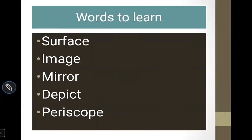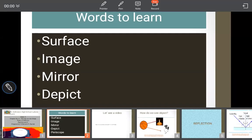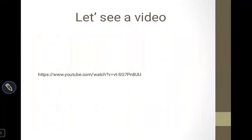The words you have to learn are: surface, image, mirror, depict, and periscope. We will focus on these. How is the mirror? What is the image? What is the mirror? What is the light? What does light reflect and what do you see in the mirror? Then we will see how the periscope helps to see things. Now we will look into the video.